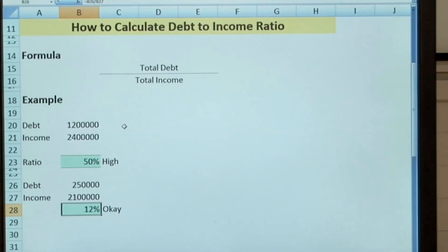It gives you a debt to income ratio of 12% so this ratio will be deemed okay because you've got a lot less debt in relation to the income that you're seeing. So your financial position is more secure.